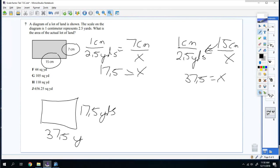Now, both of those numbers are not my answer, but instead I need to find the area. The way you find the area is you multiply. So you're going to do 37.5 times 17.5. When you do that, you get 656.25 yards squared, which the answer is J.